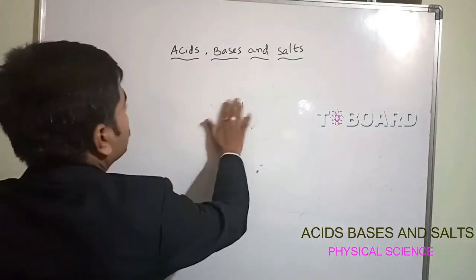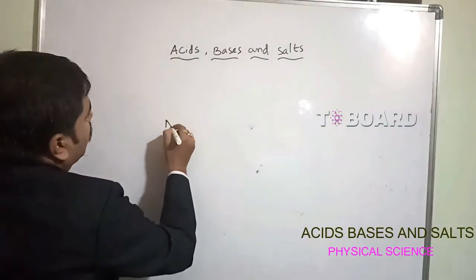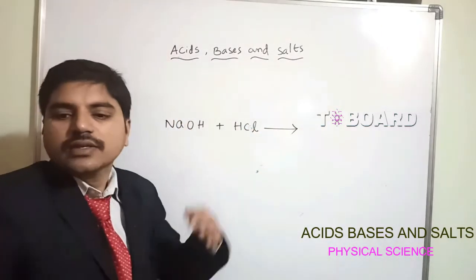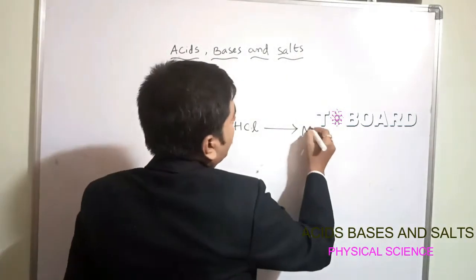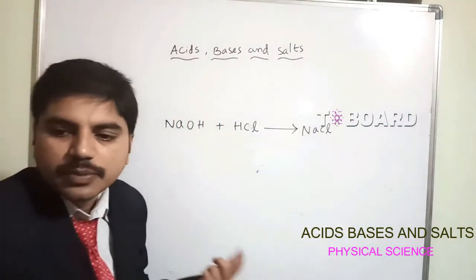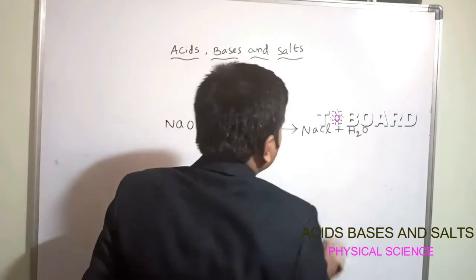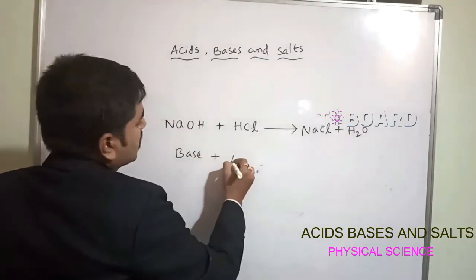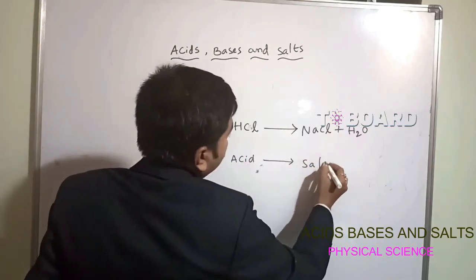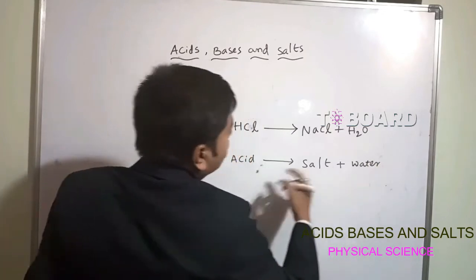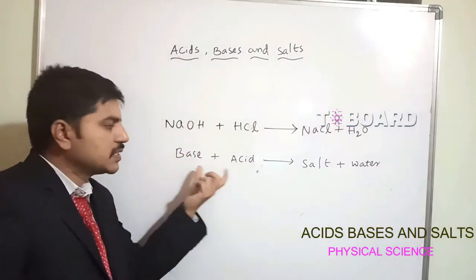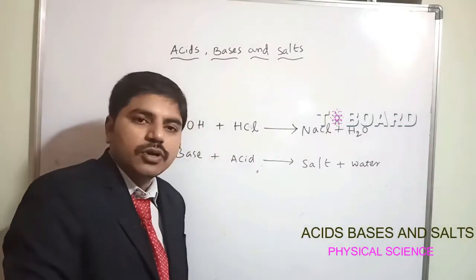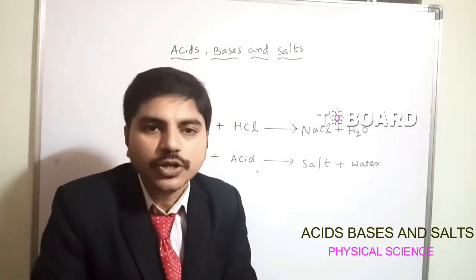The chemical equation for neutralization: NaOH + HCl → NaCl + H₂O. One is a base and another is an acid - when base mixes with acid, it gives salt and water. This product is a salt; this process is called neutralization.